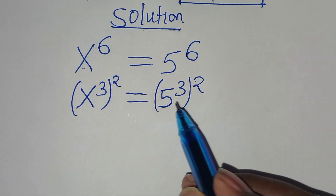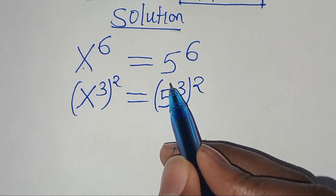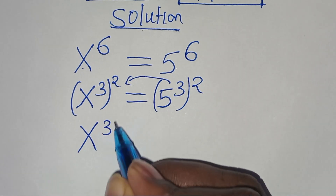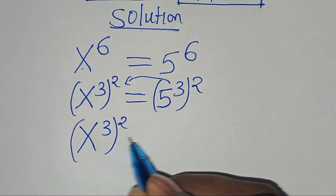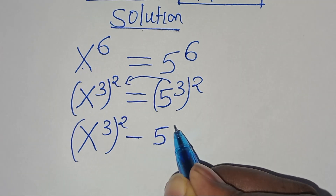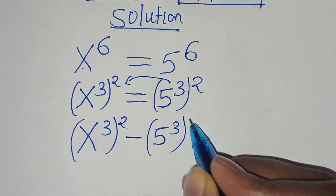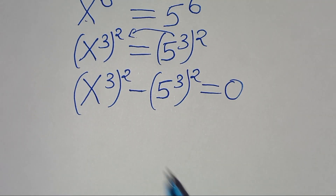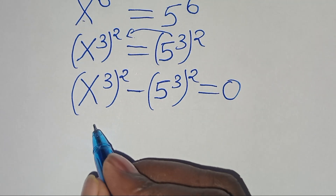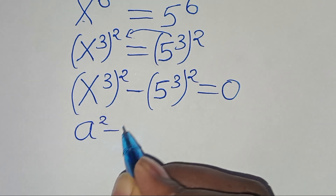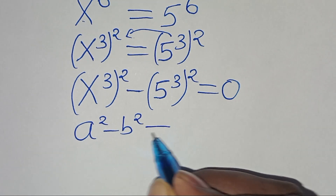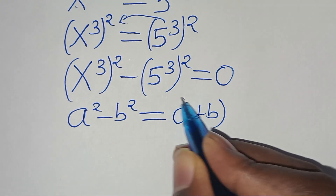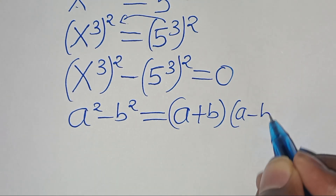The next step is to take 5 to the power of 3, to the power of 2, on the left hand side, so that now we have x to the power of 3, raised to power 2, minus 5 to the power of 3, raised to power 2, equal to 0. We find that this equation is in the form of a squared minus b squared, which can be expressed as a plus b, then a minus b.